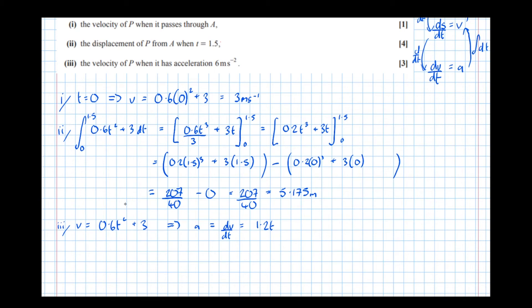Equals 1.2 t. And we're told that the acceleration is equal to 6, so the acceleration 1.2 t equals 6, which means that t equals 6 over 1.2, which is 5 seconds. So it asks us for the velocity at this time, at 5 seconds.